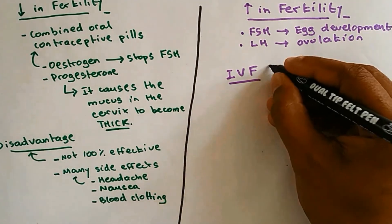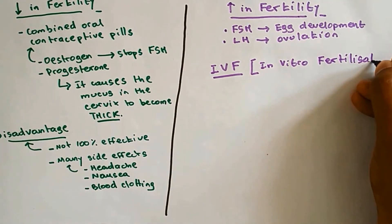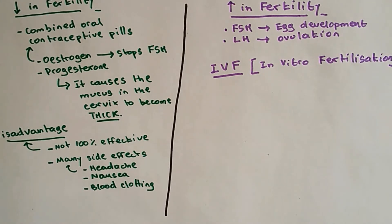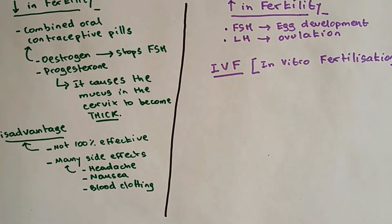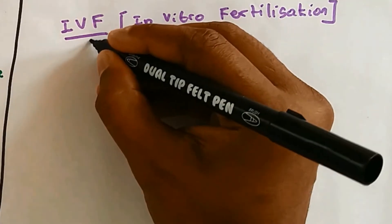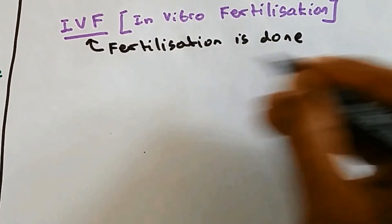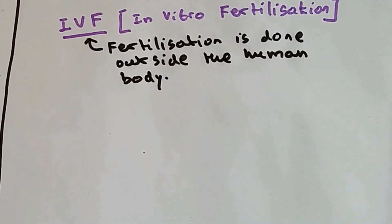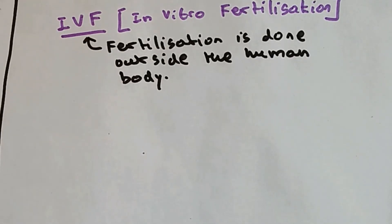IVF stands for in vitro fertilization. In vitro means outside the human body, so fertilization is done not in the body but outside it. If it's not done in the body, where is it done? The sperm and egg are fertilized in a test tube.